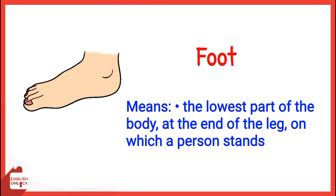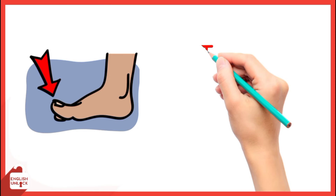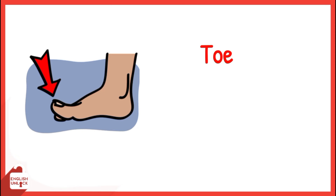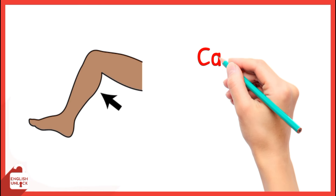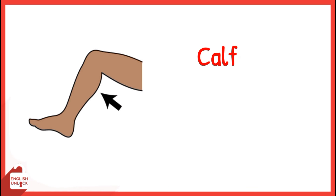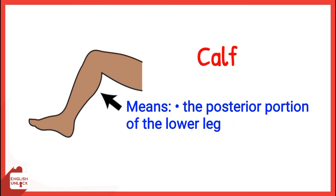Foot means the lowest part of the body at the end of the leg on which a person stands. Toe means any of the five separate parts at the end of the foot. Calf means the posterior portion of the lower leg.